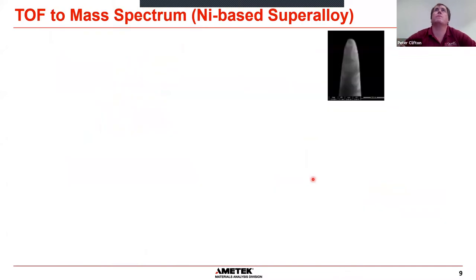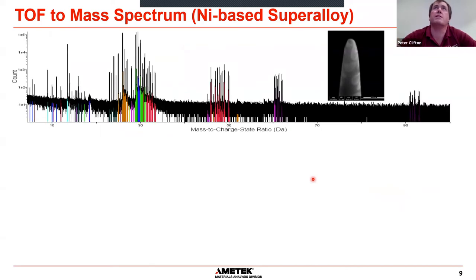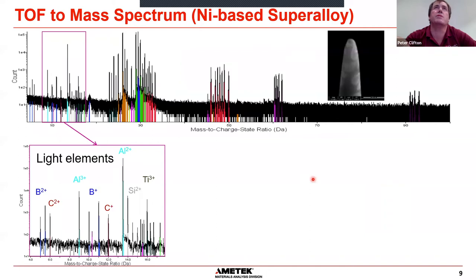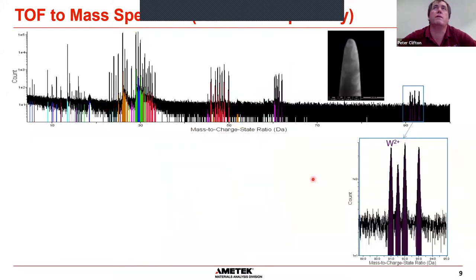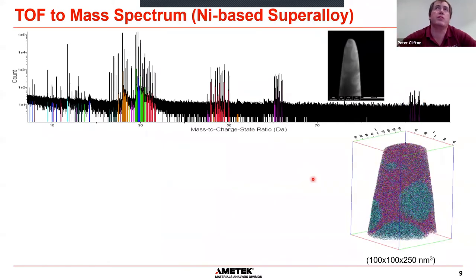The reconstruction method is simple: it assumes a hemispherical end surface for the specimen, uses the position on the detector and deprojects it using the current magnification onto the model surface. Each time we add an ion we increment the depth, building up the third dimension in the data. There are lots of developments ongoing to improve and extend the capability of this reconstruction. The Z dimension comes from the order of arrival of the ions.